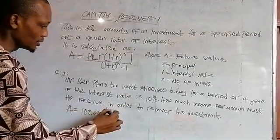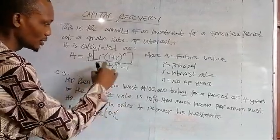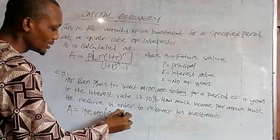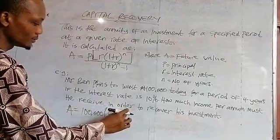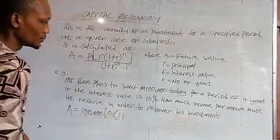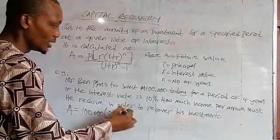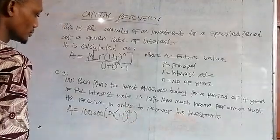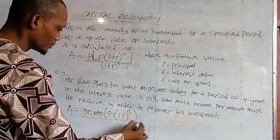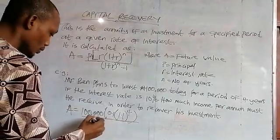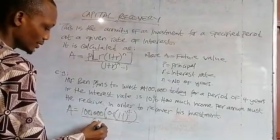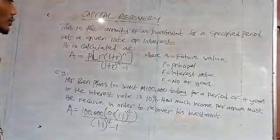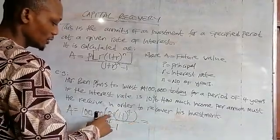So 10% is 0.1. We open a bracket: 1 plus R — that is 1 plus 10%, which equals 1.1 — raised to power n, which is 4. Everything over the denominator: open bracket, 1 plus R — that is 1.1 — raised to power n, which is 4, minus 1. Let's expand this.